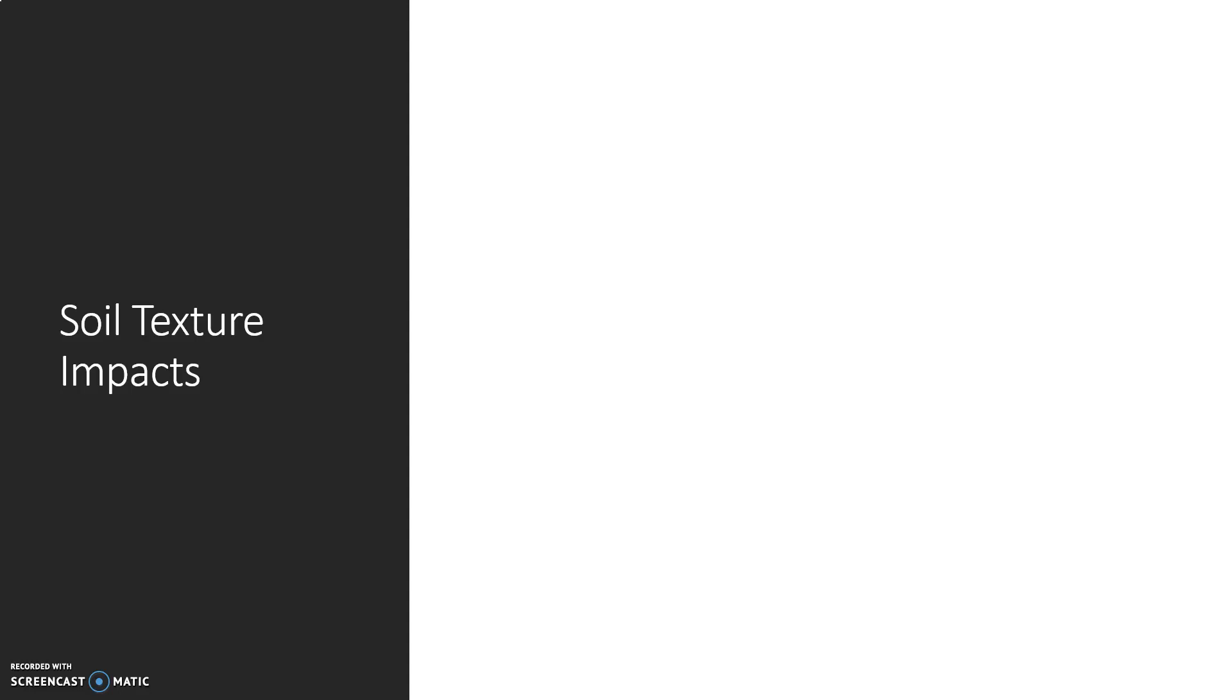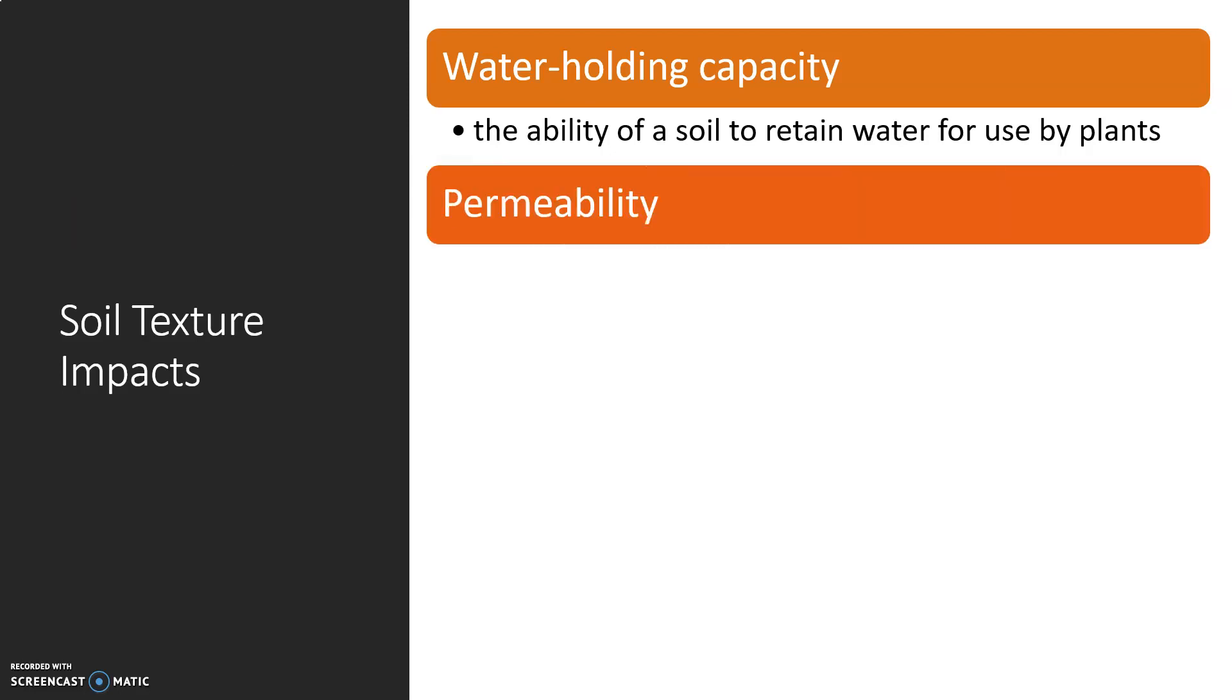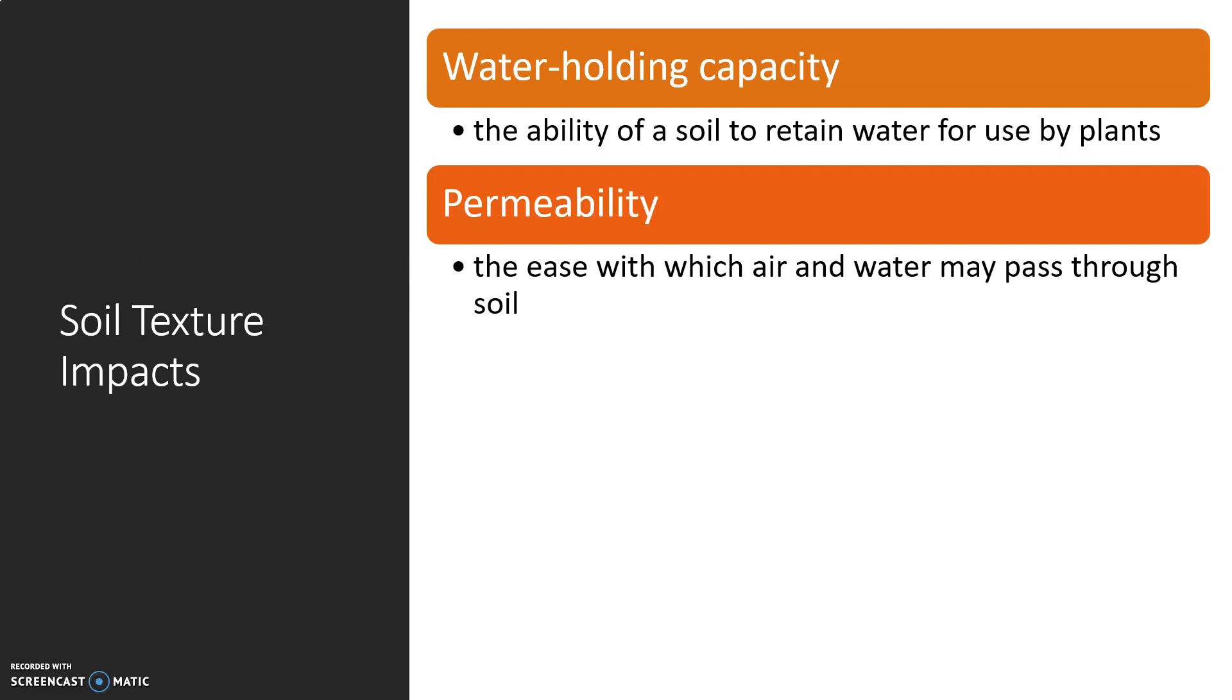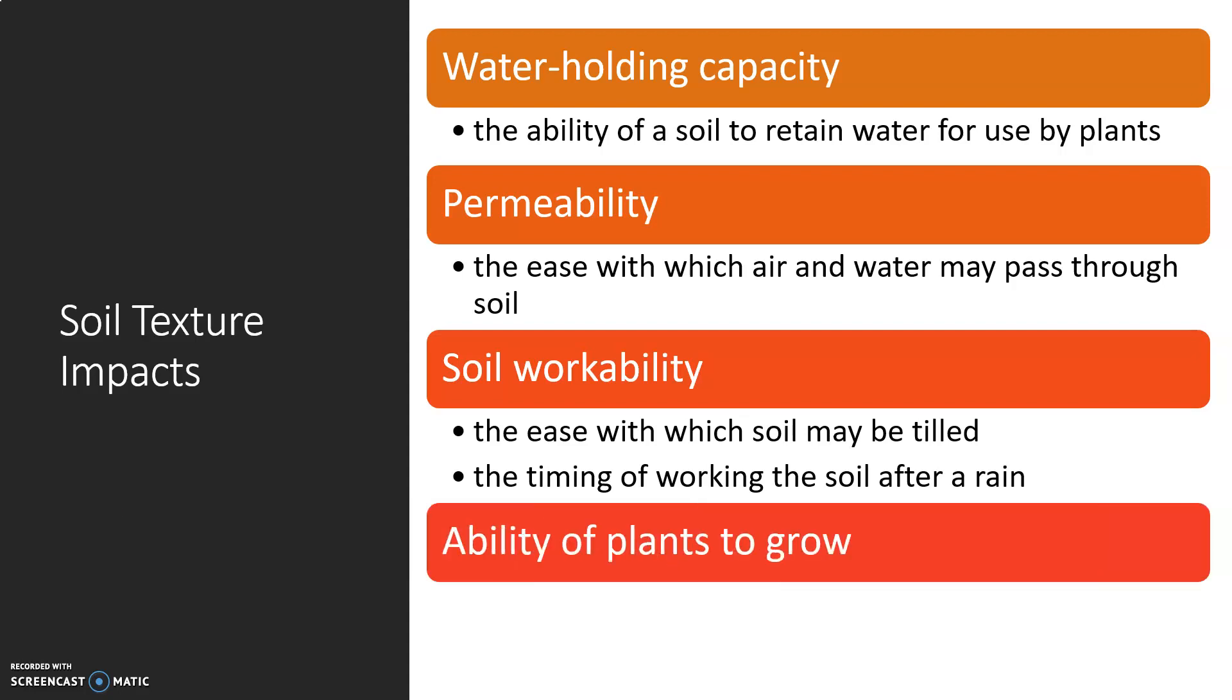Soil texture impacts many things, including water holding capacity, which is the ability of soil to retain water for use by plants. Soil permeability is the ease with which air and water may pass through the soil. Soil workability is the ease with which soil may be tilled and the timing of working with the soil after a rain. Soil texture also impacts the ability of plants to grow. Certain textures are not beneficial to plant growth and certain crops have difficulties growing in certain textures.